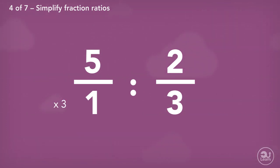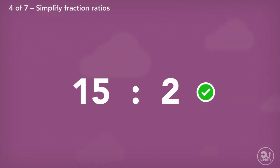Since we are trying to keep the fractions equivalent, we also multiply the numerator by 3, giving us the ratio 15 out of 3 to 2 out of 3. Finally, we multiply both fractions by 3, giving us the final answer of 15 to 2.